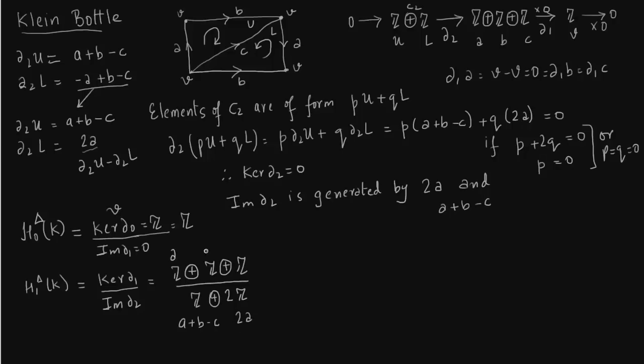So this is generated by A and this is generated by B. So instead of C, we will generate this by A plus B minus C. So obviously now cancellation occurs. So A by 2A will give you Z2 and this and this cancels out and what we get is Z here. So that is H1.